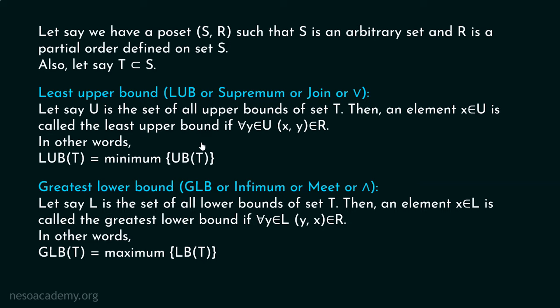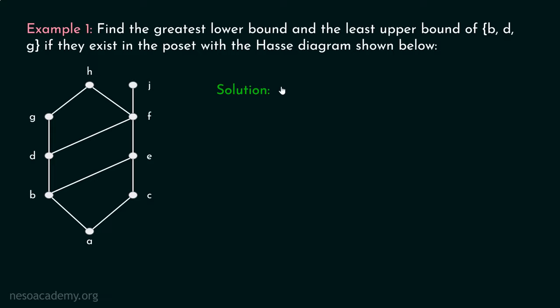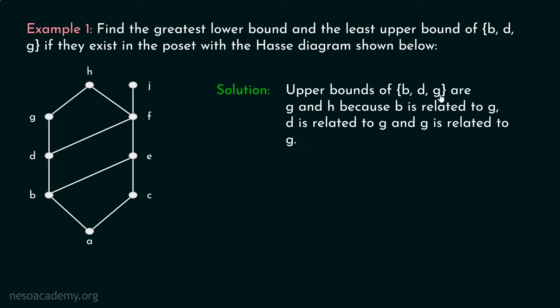Now we will understand these two definitions better with the help of an example. Find the greatest lower bound and the least upper bound of the subset B, D, G if they exist in the poset with the Hess diagram shown. We have to find the greatest lower bound and the least upper bound of this set. Let's consider our solution. First, we will find the least upper bound of B, D, G. Before finding the least upper bound, we will find all the upper bounds of B, D, G, then select the least element out of these upper bounds.